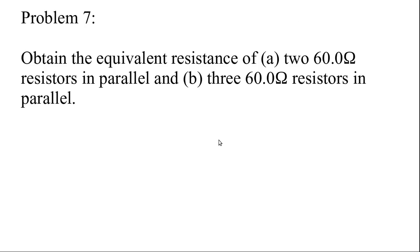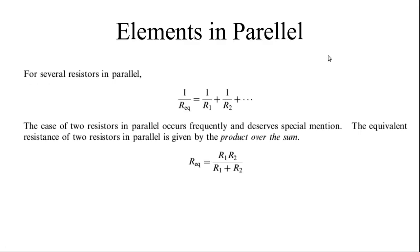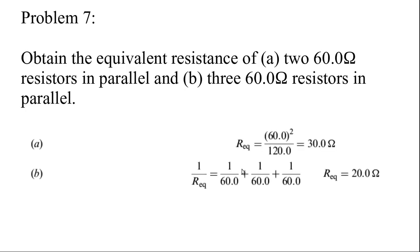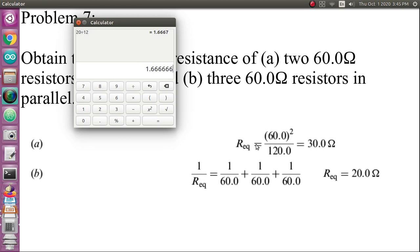Now let's see a problem: obtain the equivalent resistance of two 60-ohm resistors in parallel and three 60-ohm resistors in parallel. For two resistors each of 60 ohms, you know the formula for parallel connection. You can use R_equivalent = (R1 × R2) / (R1 + R2). So R_equivalent = (R1 × R2) / (R1 + R2).